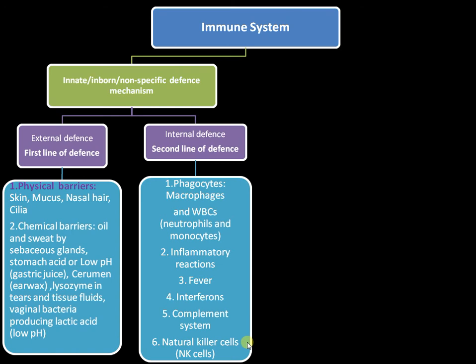The complement system is also a non-specific defense mechanism involving 20 to 22 proteins that work together to prevent the entry of pathogens into the system. Natural killer cells are involved in non-specific defense and are particularly targeted against cancerous cells. All of these form the internal defense — these mechanisms have no specificity and will act against any pathogen without specifically recognizing it.